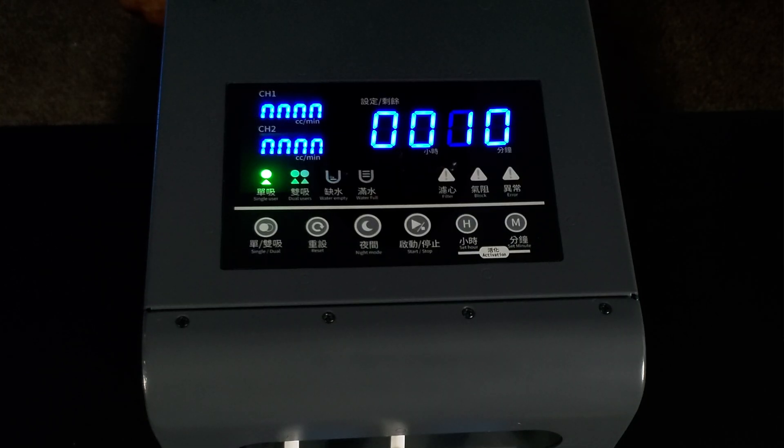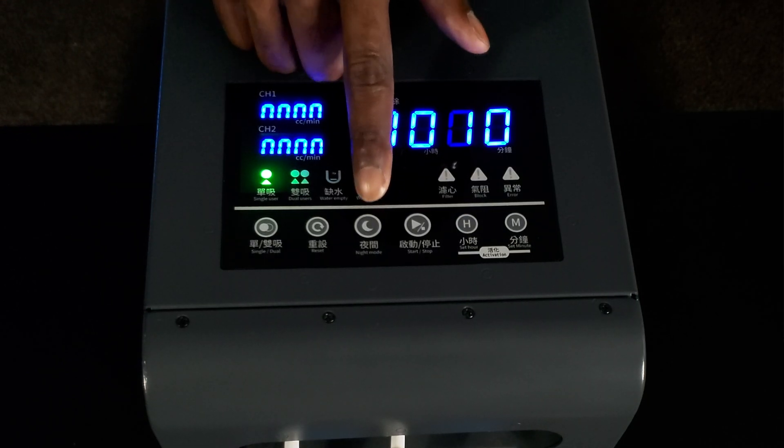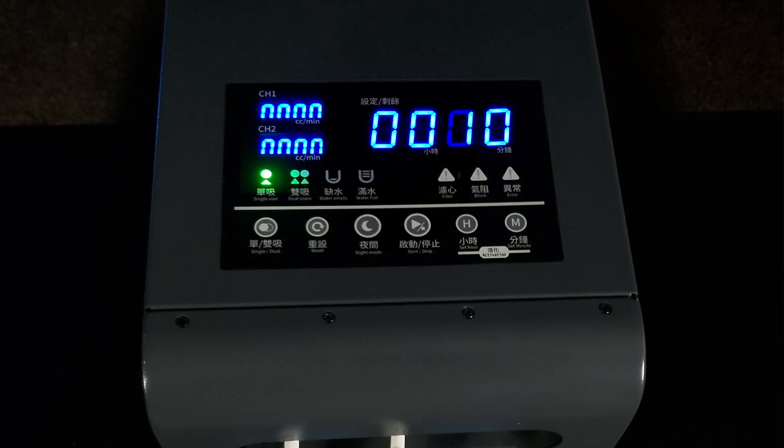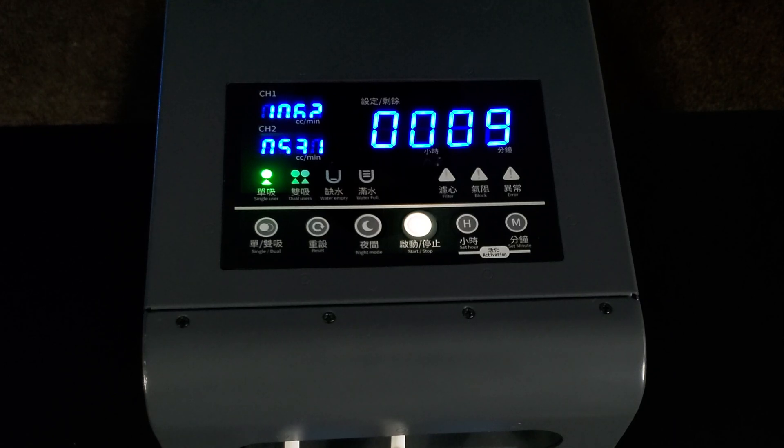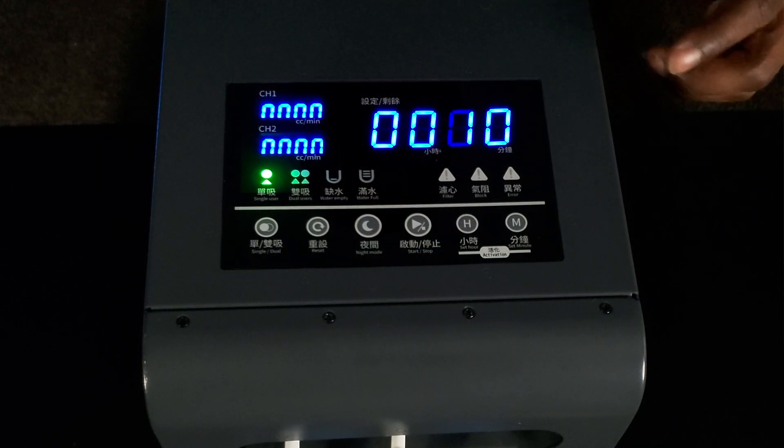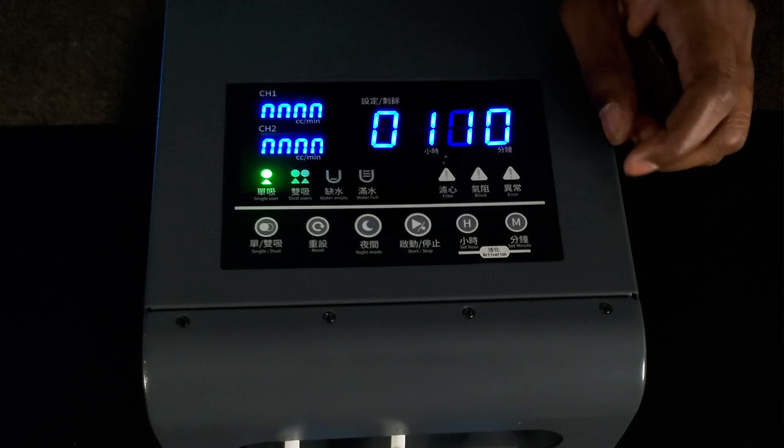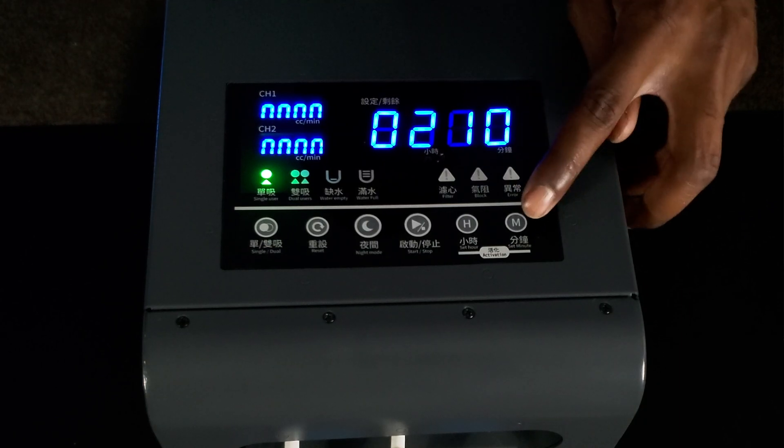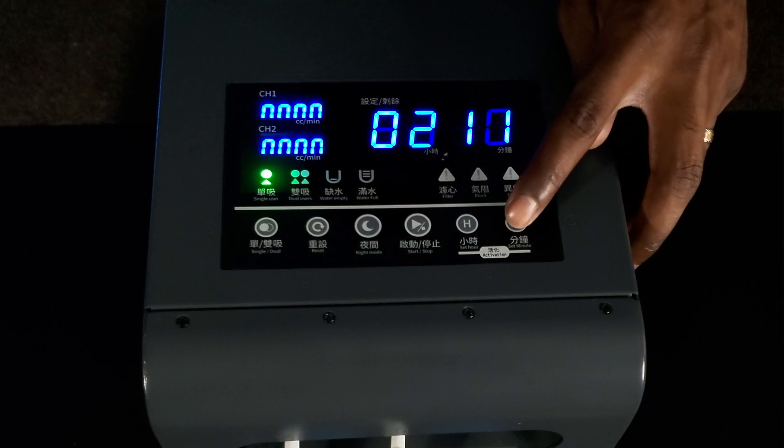Next would be the night mode button. This button will allow you to dim the lights on the display in case you are wanting to breathe at night or in low light settings. The start and stop button initiates the production of hydrogen gas and oxygen gas or stops the system when you want your inhalation session to cease. Lastly would be the set hour and set minute buttons allowing you to input your session times in hours and in minutes.